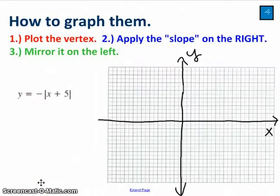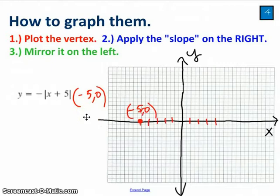Okay, graphing one of these. It's a three-step process. The first is to plot that vertex. And so in the case of this equation, this absolute value function here, the vertex is going to be at negative 5, 0. I hope that makes sense from the previous slide. So I plot the point, negative 5, 0.